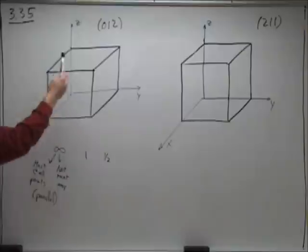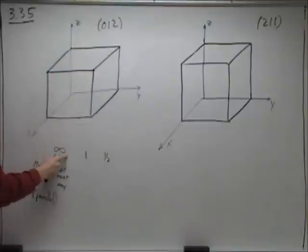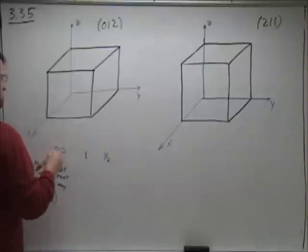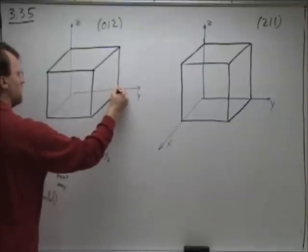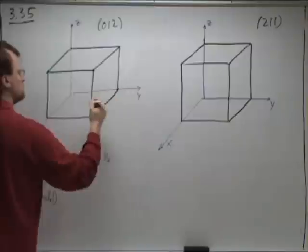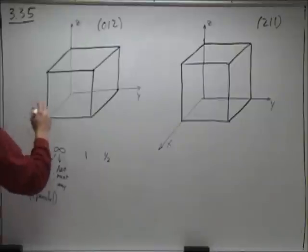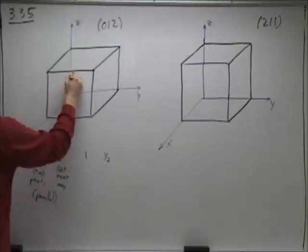So we know by these indices that our plane is parallel to the x axis and will intersect the y axis at 1 and intersect the z axis at 1/2.